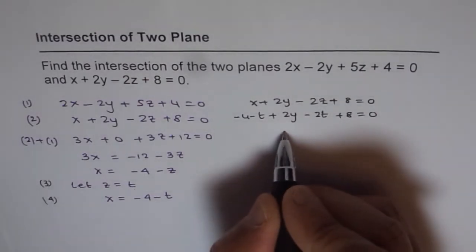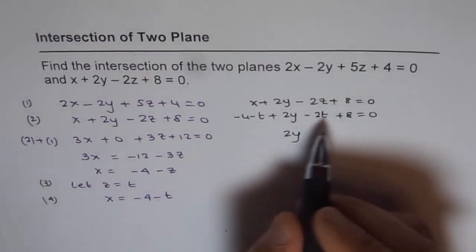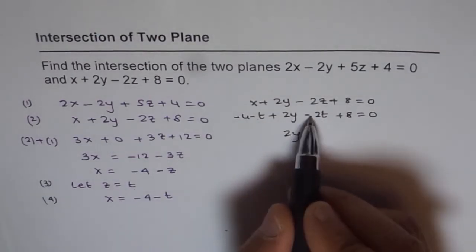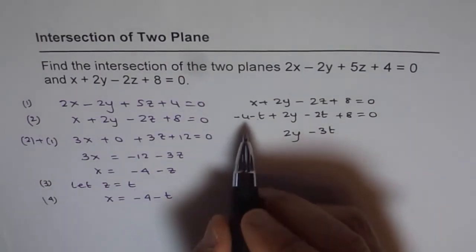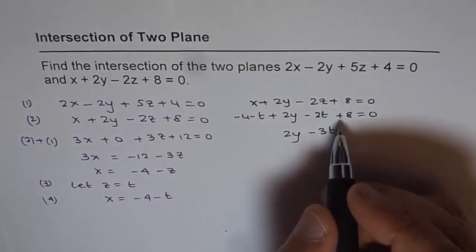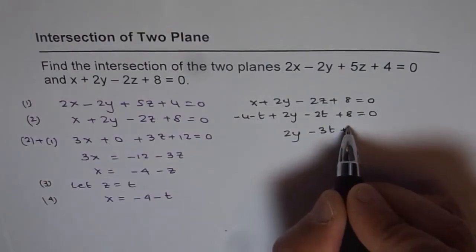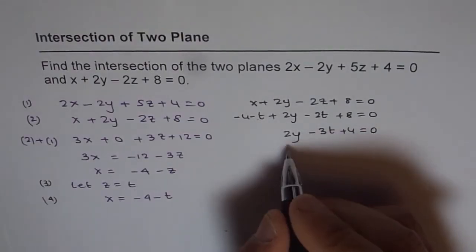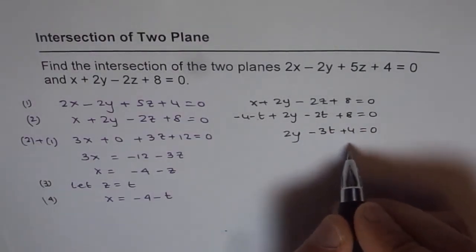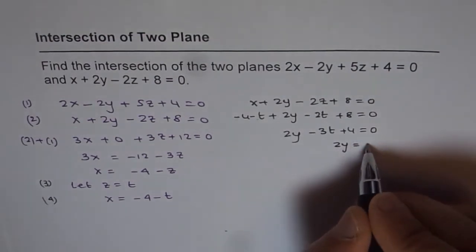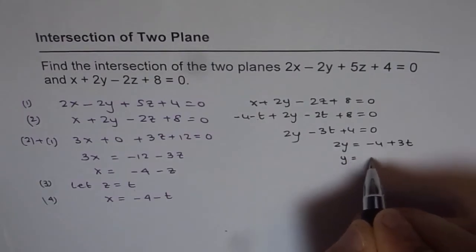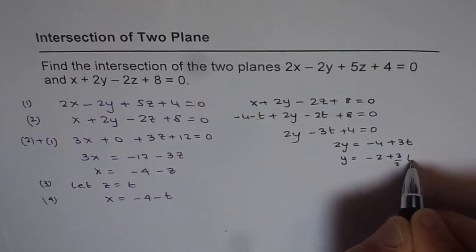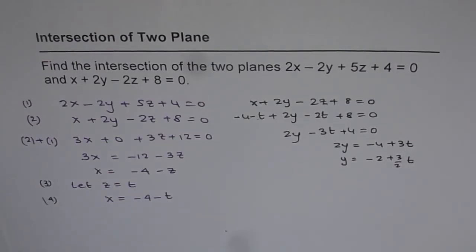We have 2y, and for t: -1 and -2 gives -3t. For constants: -4 and +8 gives +4. So 2y - 3t + 4 = 0, which means 2y = -4 + 3t, or y = -2 + 3t/2.